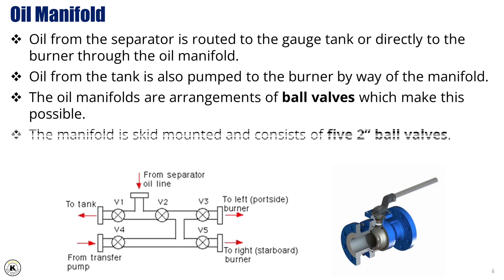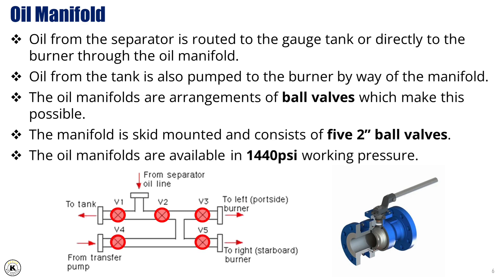The oil manifold is designed as a skid mounted assembly, consisting of five two-inch ball valves, allowing for easy transport and installation. The oil manifolds are built to withstand demanding field conditions, with a standard working pressure rating of 1,440 psi, ensuring safe and reliable operation during well testing activities.